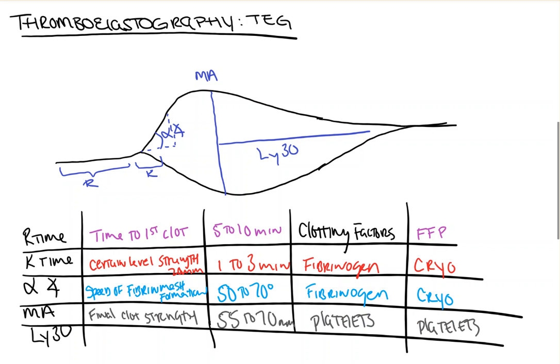And our last part we're going to discuss is the LY30, or the lysis at 30 minutes. And this is the percentage lysis of clot at 30 minutes. A normal value is 0 to 8%. And if there's more lysis going on at this point, it means that you have increased fibrinolysis. And you should treat these people with amicar or TXA, tranexamic acid, because this is going to help prevent further clot lysis.